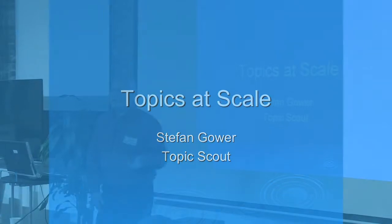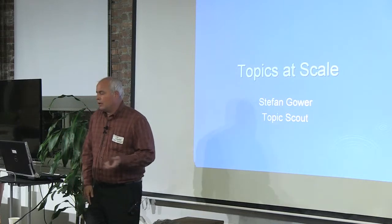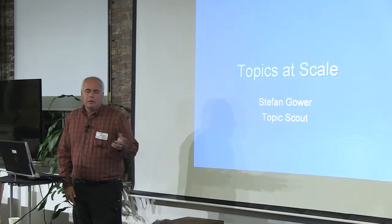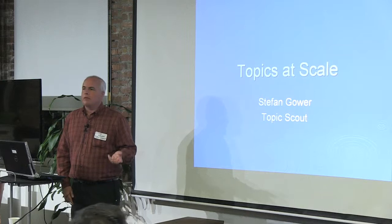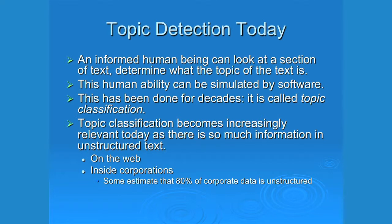When someone says 'scale' it can mean many things, but let's say to scale you might want to get to at least 10,000 topics, not a hundred thousand or more. A human being can look at a piece of text and, as long as they have enough information, they're pretty good at figuring out what it's about. This type of topic classification — sometimes called topic identification — is pretty important because there's a lot of unstructured text and a lot of applications.